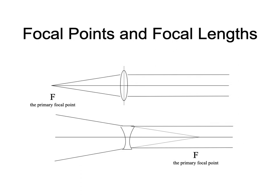Let's learn some vocabulary. The primary focal point is the point from which rays of light emanating and encountering the lens will emerge from the lens with zero vergence — will emerge parallel. The primary focal point of a convex (plus) lens is to the left of the lens. The primary focal point of a minus lens is going to be to the right of the lens — it's the point in space from which rays emanating will emerge with a vergence of zero.